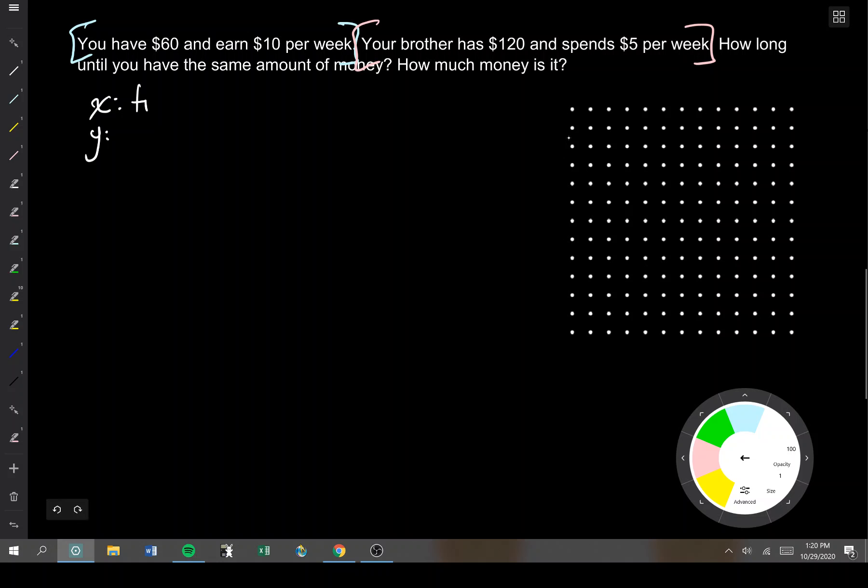There's two things we're trying to find. X is going to be time, and that is going to be in weeks. And Y is going to be money, and that is going to be in dollars, as opposed to rubles or yen or something.